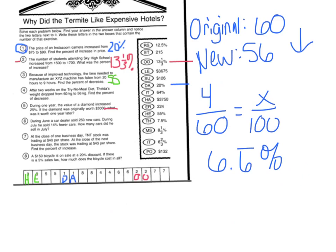You're not going to see 6.6 repeating on the sheet and you might think you're wrong, but let's take a look at some that are close. I do see 6 and two-thirds percent — and I know that 2 divided by 3 is .6 repeating, so these two are actually equal to each other. So I go to box 4 and put in IT.